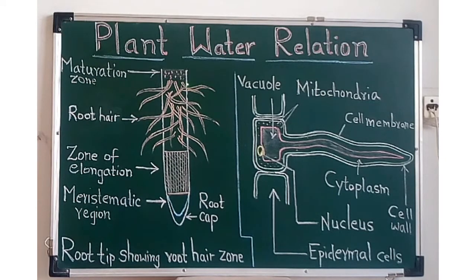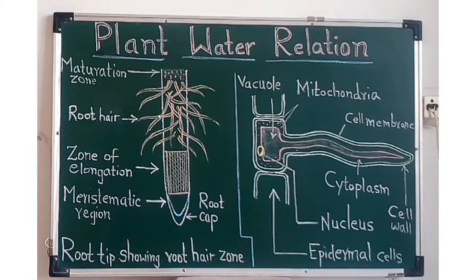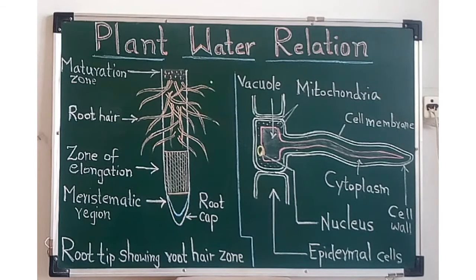Water acts as raw material for the process of photosynthesis. Water also helps to provide turgidity, which is necessary for the stiffness of plant tissue. Transpiration means a large quantity of water is passed out as water vapor.